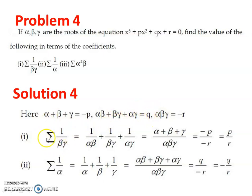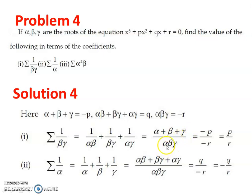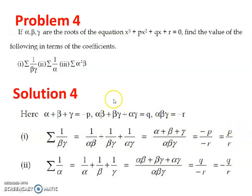Now let us find sigma(1/βγ). Sigma(1/βγ) equals 1/(αβ) + 1/(βγ) + 1/(αγ). Taking the common denominator as alpha·beta·gamma, the numerator simplifies to alpha plus beta plus gamma. Since alpha + beta + gamma = -p and alpha·beta·gamma = -r, we get sigma(1/βγ) = p/r. So we have expressed sigma(1/βγ) in terms of p and r.